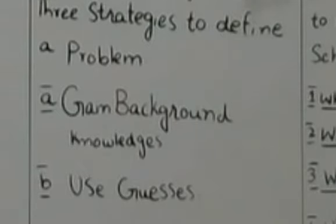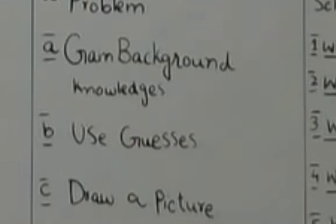Number one is gain background knowledge. We try to know the situation and circumstances in which the problem is happening. Second strategy is use guesses. In this strategy, we can collect its environment, values and traditions. These cases may be based upon our past experiences.